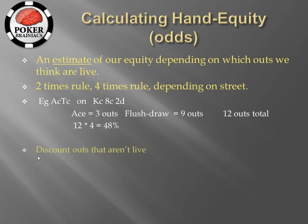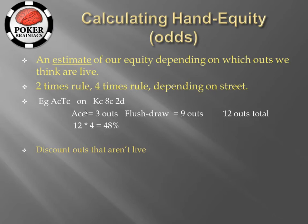One thing you definitely need to do is discount any outs that aren't live or may not be live. For example, in the above example we are assuming that because villain has a king, our ace out is good. But if villain has a hand like ace-king, all of our ace outs are dead. If we knew our ace outs were dead we would only want to times by nine outs — nine times four gives us 36%. Or we can partially discount outs, counting only two or one of the three ace outs depending on how often villain might have that ace blocked or beaten with two pair or a set.